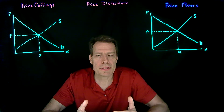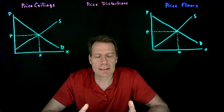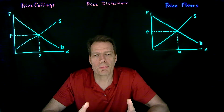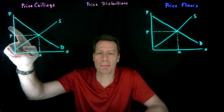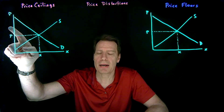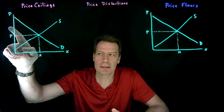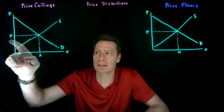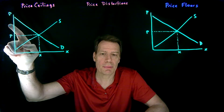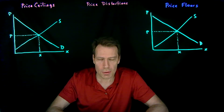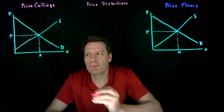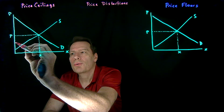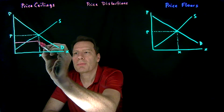If the government sets a price ceiling, it says you can't charge more than a certain price. If it sets that price ceiling above the equilibrium price, the policy will have no effect because the market doesn't want a price above that ceiling anyways. So in order for a price ceiling to have an effect, you'd have to set it below the equilibrium price.